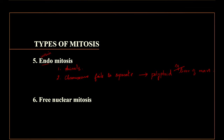Coming to free nuclear mitosis — the nucleus is going to keep on separating, so that is why it is known as free nuclear mitosis. It occurs in Rhizopus (fungi), Opalina (a protozoan), and also in the liquid endosperm in coconut. The main thing here is there won't be cytokinesis — only karyokinesis is going to happen.